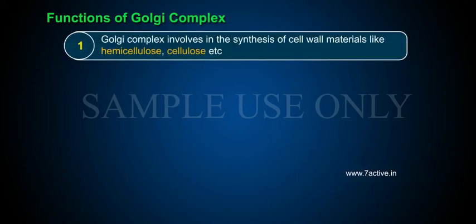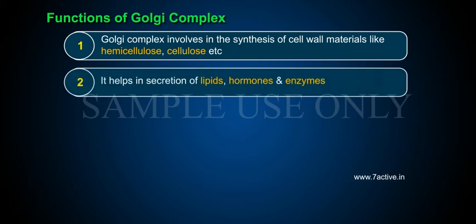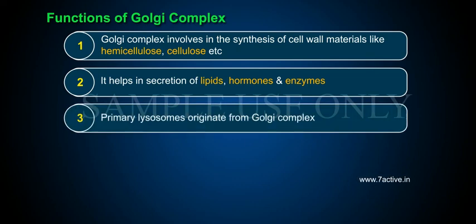Functions of Golgi Complex. 1. Golgi complex is involved in the synthesis of cell wall materials like hemicellulose, cellulose, etc. 2. It helps in secretion of lipids, hormones and enzymes. 3. Primary lysosomes originate from Golgi complex.